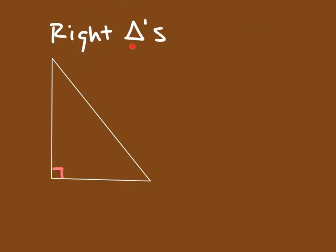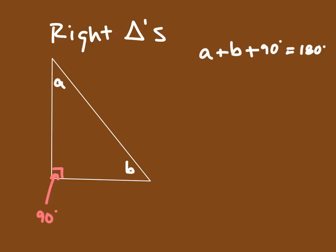We can extend this concept to right triangles. In a right triangle, one of the angles has to be 90 degrees. Calling the other two angles A and B, we can write: A plus B plus 90 degrees is equal to 180 degrees. Using the triangle sum theorem and subtracting 90 from both sides, we get that angle A plus angle B equals 90 degrees.